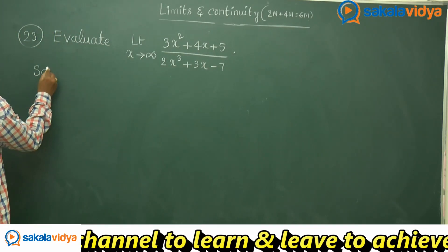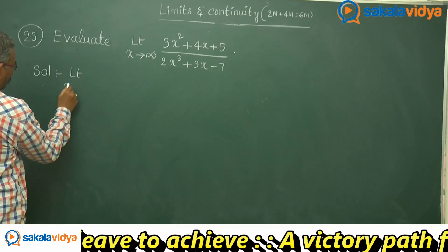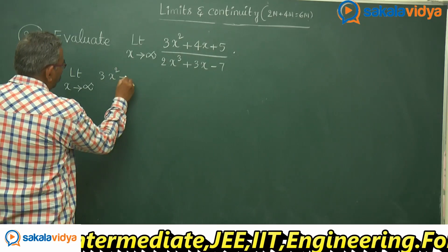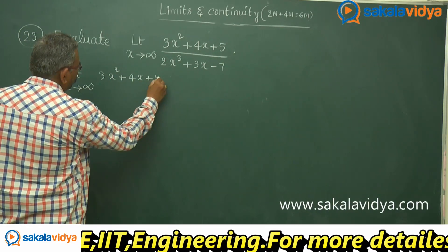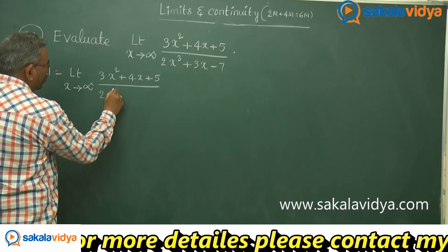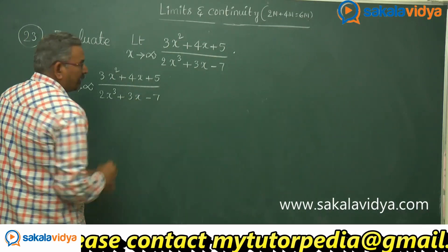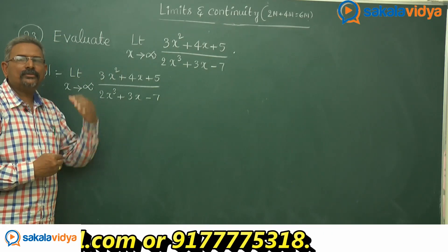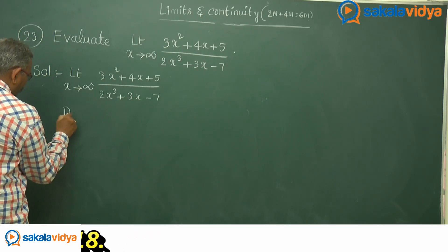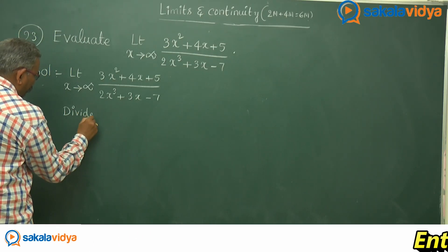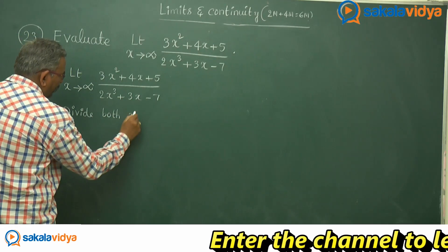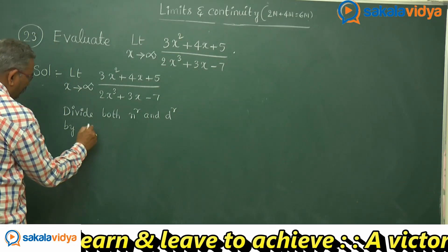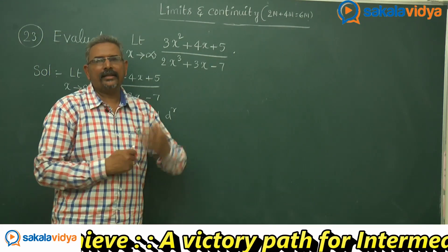Solution: limit x tends to infinity of 3x squared plus 4x plus 5, divided by 2x cube plus 3x minus 7. Since the highest degree here is 3, divide both numerator and denominator by x cube, as x cube is the highest degree of the polynomial here.